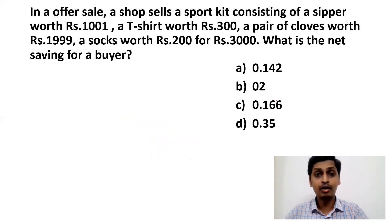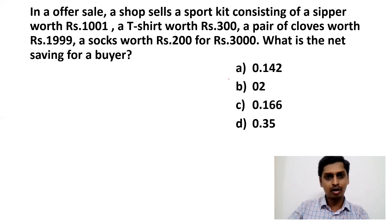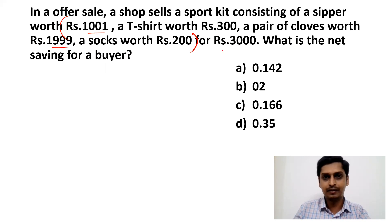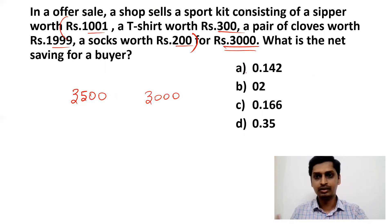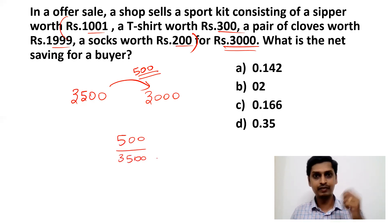In an offer sale, a shopkeeper sells a sport kit consisting of: a zipper worth ₹1001, a T-shirt worth ₹300, a pair of clothes worth ₹1999, and socks worth ₹200 — all for ₹3000. What is the net saving for the buyer? The buyer is purchasing all these items for 1001 + 300 + 1999 + 200 = ₹3500 total, but paying only ₹3000.